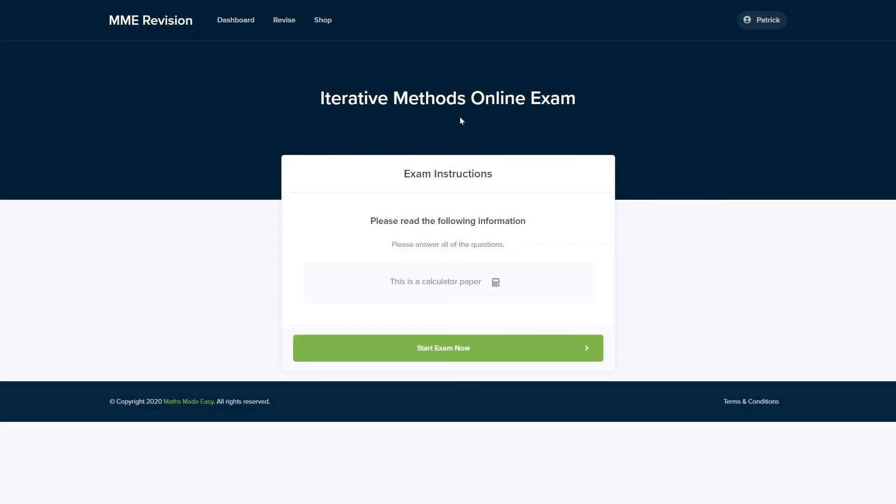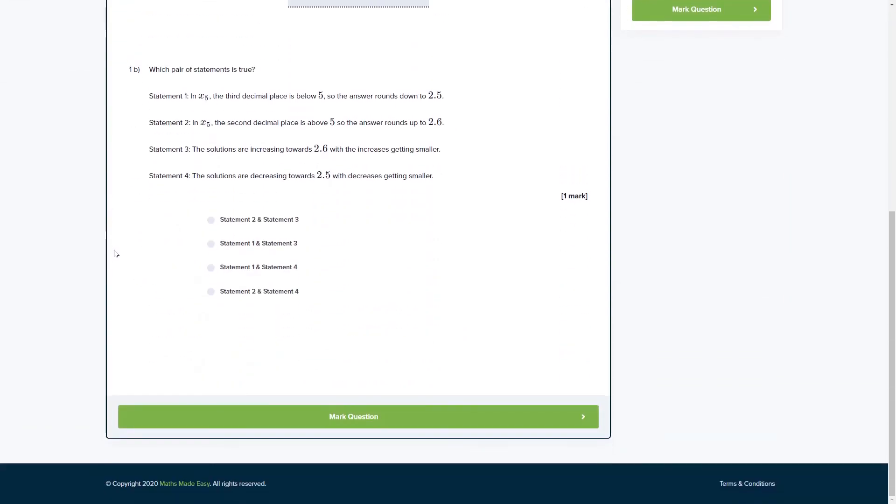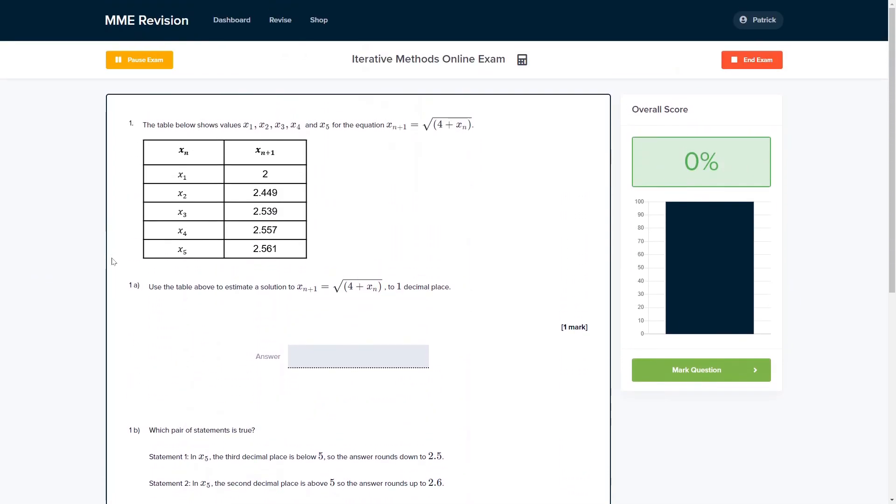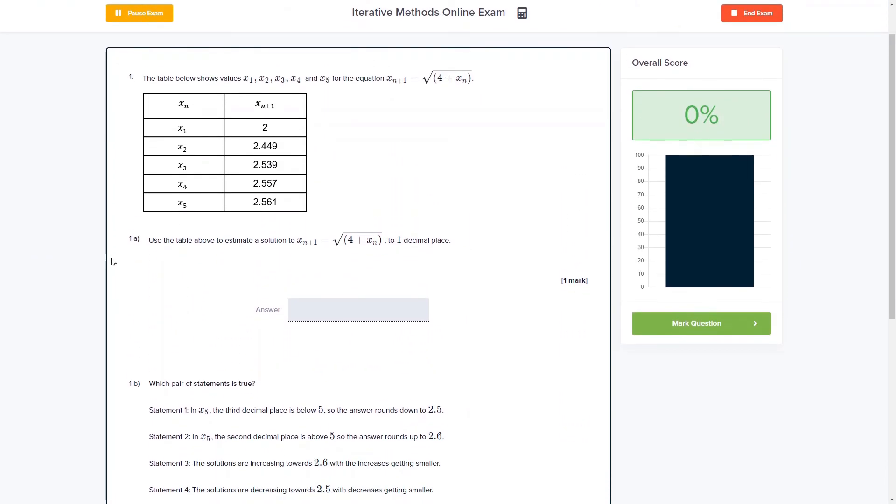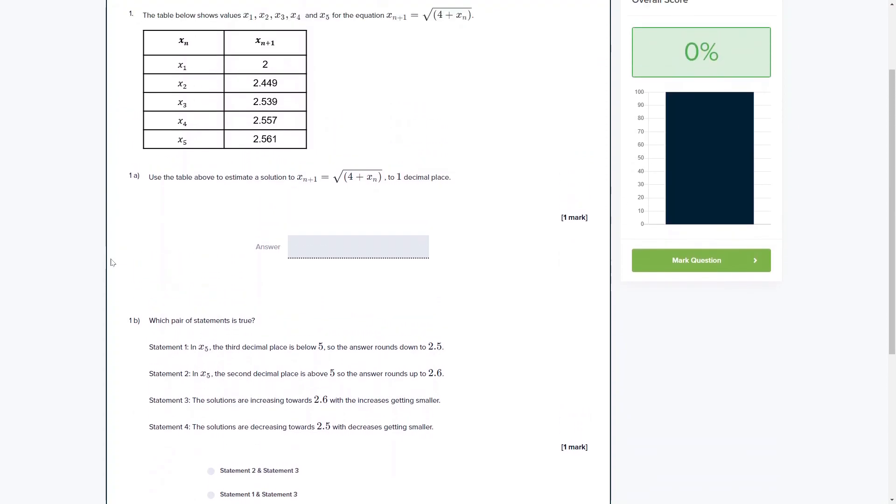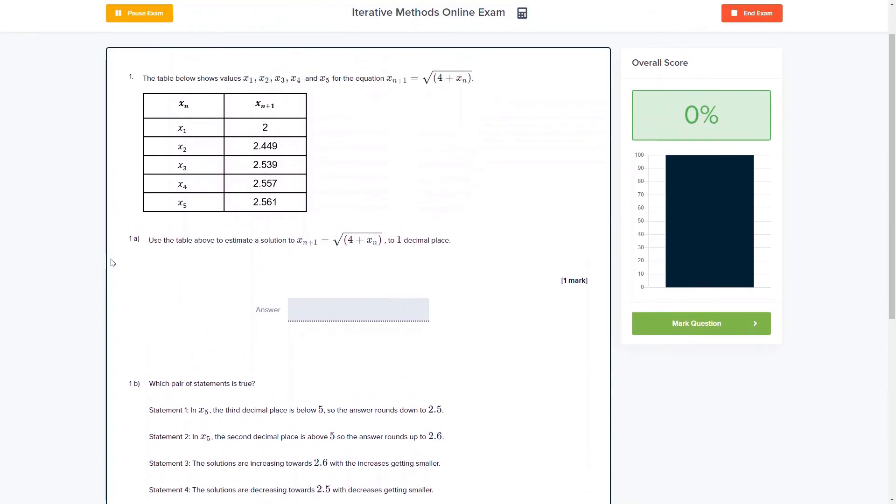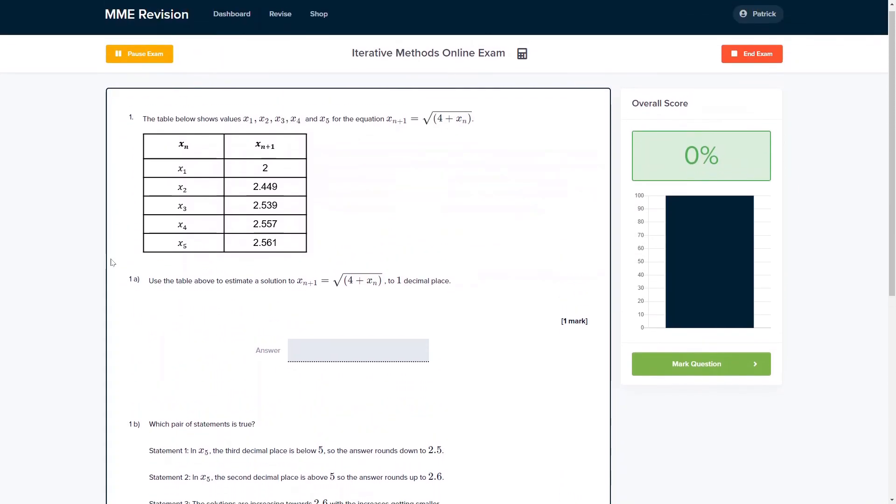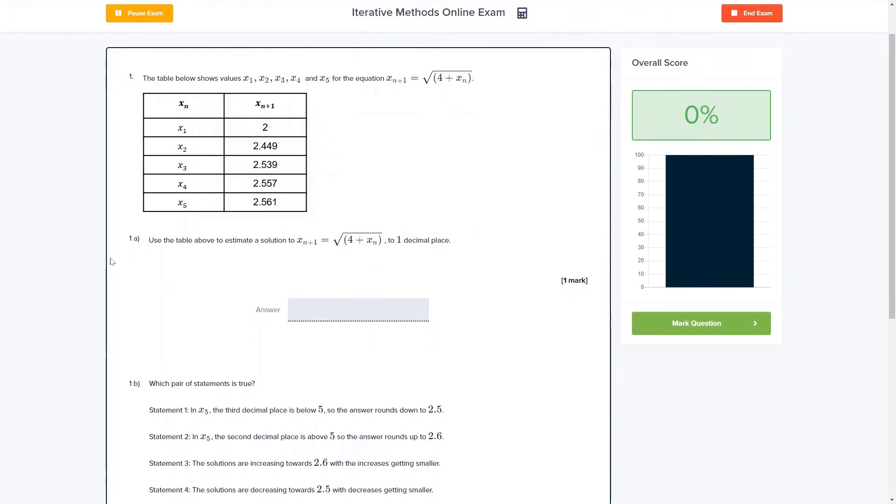So why not have a go at our online exam? This is available through our revision platform, and if you take the test you'll find loads of different questions to have a go at, all of which you'll receive instant feedback on. So it's a really good way of keeping track of your progress and finding out where you're going wrong so you can improve in time for your actual exam. So if you're interested, you can click the link below and it will take you straight there.